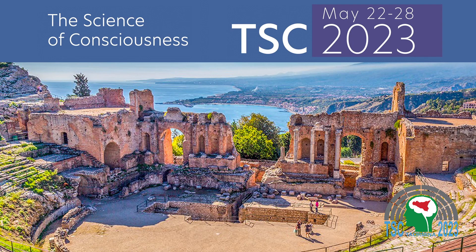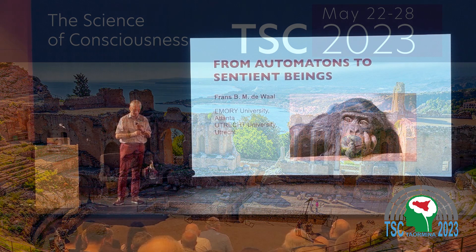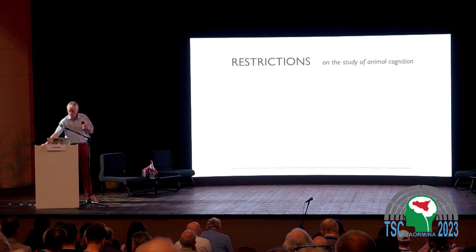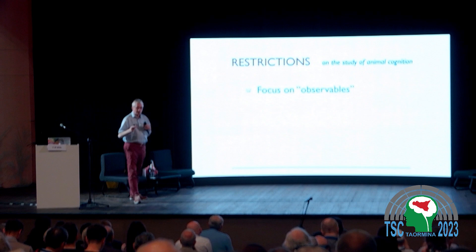Good morning everyone. I'll dive right into it because I have only half an hour and I want to cover quite a bit of material on primate cognition. Words like cognition, sentience, emotions, and consciousness were not used for animals when I was a student — they could not be used. You could not say that animals have emotions at that time. Animals were considered stimulus-response machines.